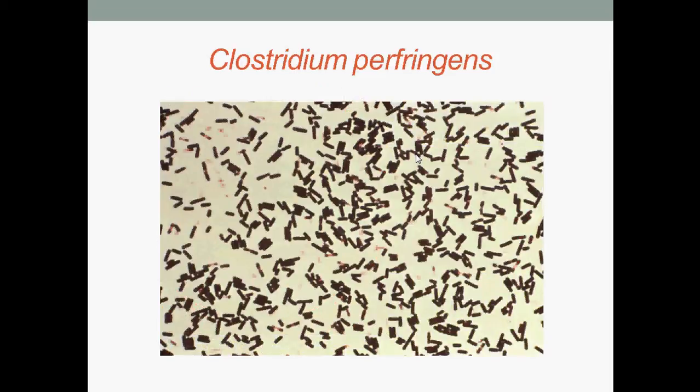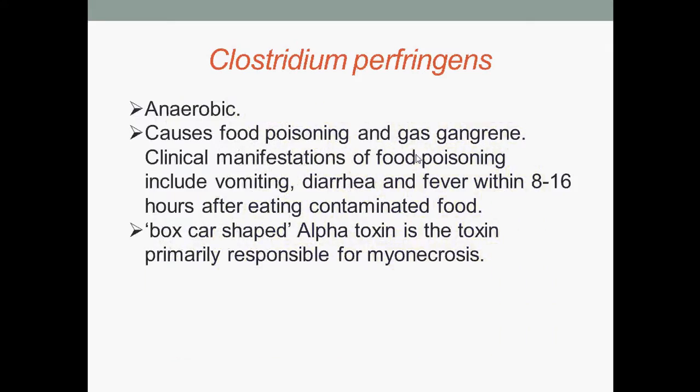Here we have Clostridium perfringens under microscopic view. Clostridium perfringens are anaerobic; they cause food poisoning and gas gangrene. Clinical manifestations of food poisoning include vomiting, diarrhoea, and fever within 8–16 hours following consumption of contaminated food. The boxcar-shaped alpha toxin is the toxin primarily responsible for myonecrosis.